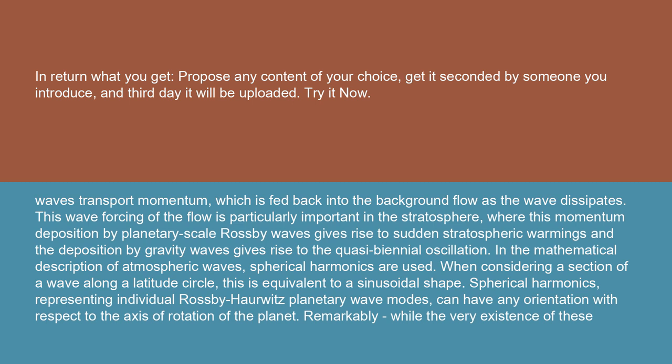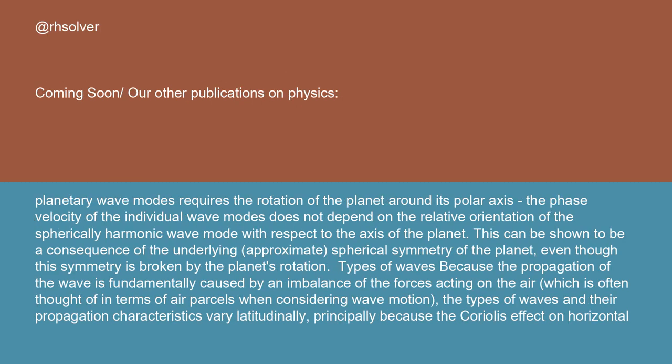Remarkably, while the very existence of these planetary wave modes requires the rotation of the planet around its polar axis, the phase velocity of the individual wave modes does not depend on the relative orientation of the spherical harmonic wave mode with respect to the axis of the planet. This can be shown to be a consequence of the underlying approximate spherical symmetry of the planet, even though this symmetry is broken by the planet's rotation.